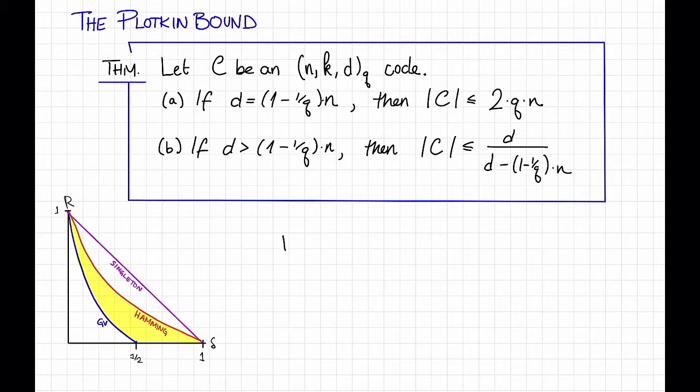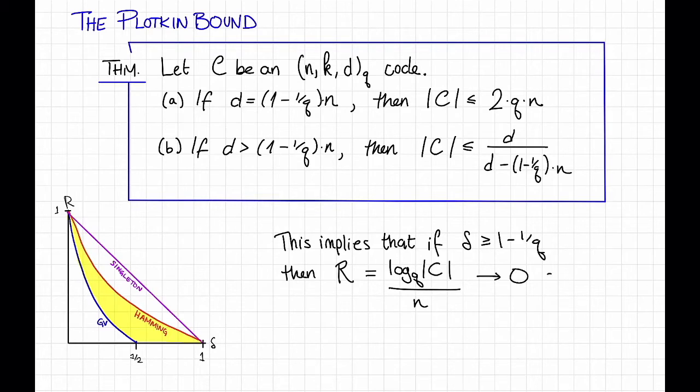The punchline here is that the answer to our previous question is no. That is, this implies that if the relative distance delta is greater than or equal to 1 minus 1 over q, that is, in the picture, we're sort of in this region over here, then the rate of the code R, which, remember, is equal by definition to the log base q of the size of c divided by N, must go to zero as N goes to infinity. That's because the log base q of either of these things divided by N tends to zero as N goes to infinity.